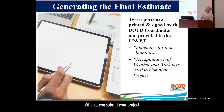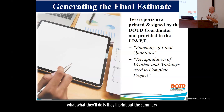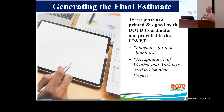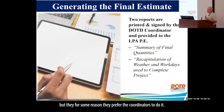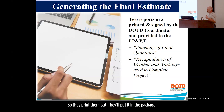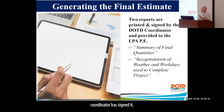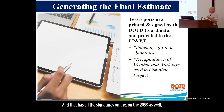When you submit your project to the DOTD coordinator, they'll print out the summary of final quantities and the recap of weather and workdays. For some reason the coordinators prefer to do that printing themselves. They print them out and put them in the package. Always make sure the DOTD coordinator has signed it and that there are all the signatures on the 2059 as well.